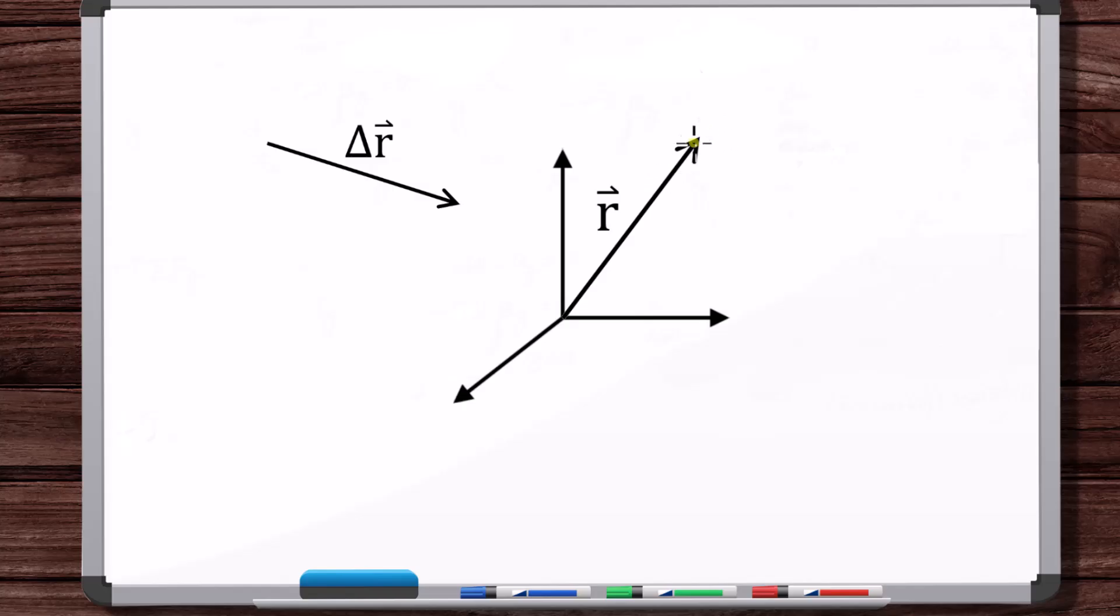Well, you might say, wait a minute, you could have a position vector tracking an object, like an airplane or something. So the vector is changing. Well, no, in that case, you're constantly getting different vectors.